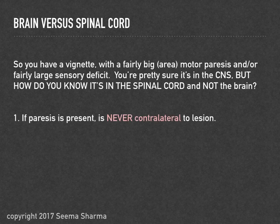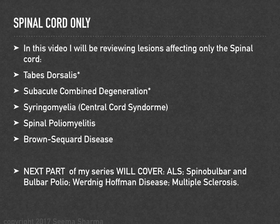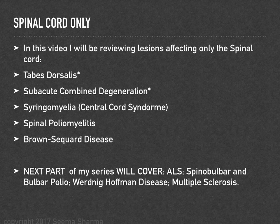If ataxia is present in a spinal cord lesion, it's always a sensory ataxia. This video covers five spinal cord lesions. Tabes dorsalis and subacute combined degeneration both involve structures outside the spinal cord — tabes dorsalis always involves the dorsal root ganglia, and subacute combined degeneration can sometimes affect peripheral nerves and rarely the brain.